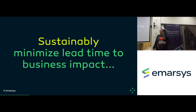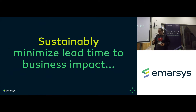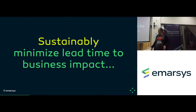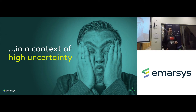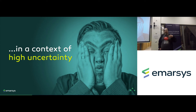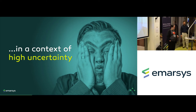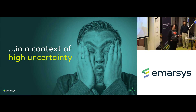We also want to do that sustainably, because if we don't, we can create a lot of business impact in the first three months and then end up with a huge mess we can't do anything about. So we want to sustainably minimize lead time to business impact — all in the context of high uncertainty. When we do software development, we don't know what the customer actually wants, we don't know if the user will find a button we placed, we don't know why our system is slow, we don't know the ideal design.